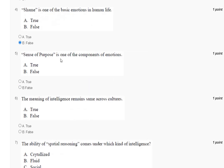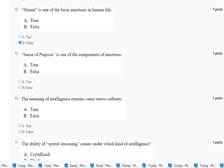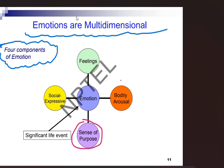Question number five: sense of purpose is one of the components of emotion. The explanation is here. The four components of emotion are: feeling, bodily arousal, sense of purpose, and social experience. Sense of purpose is indeed one of the components of emotion. So the correct answer to question number five is option number A.